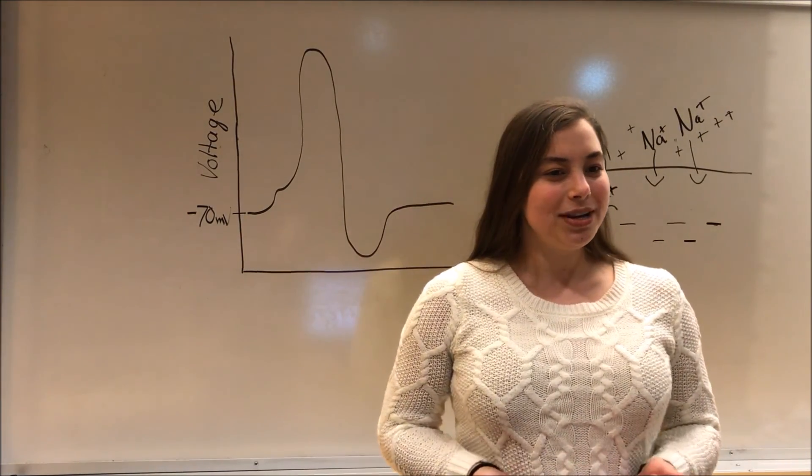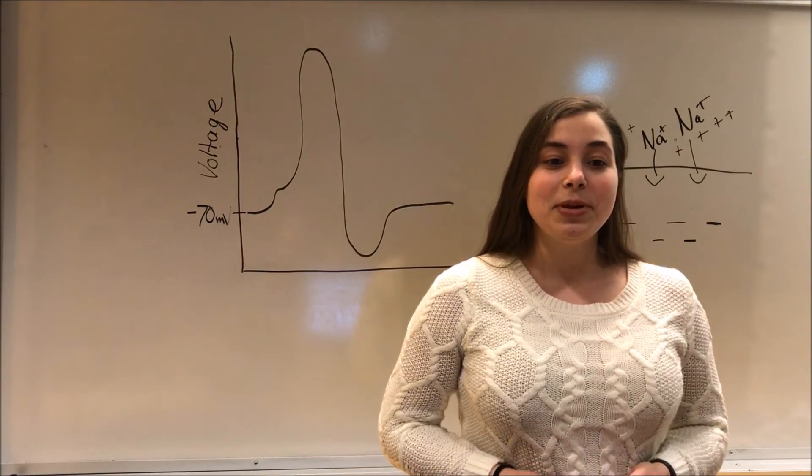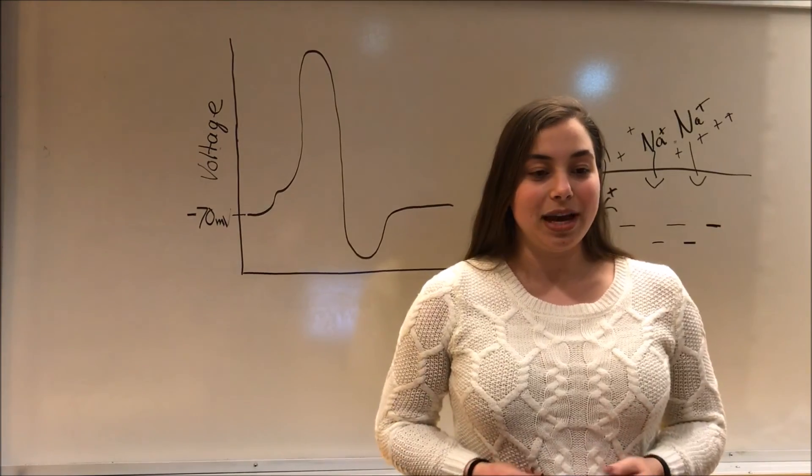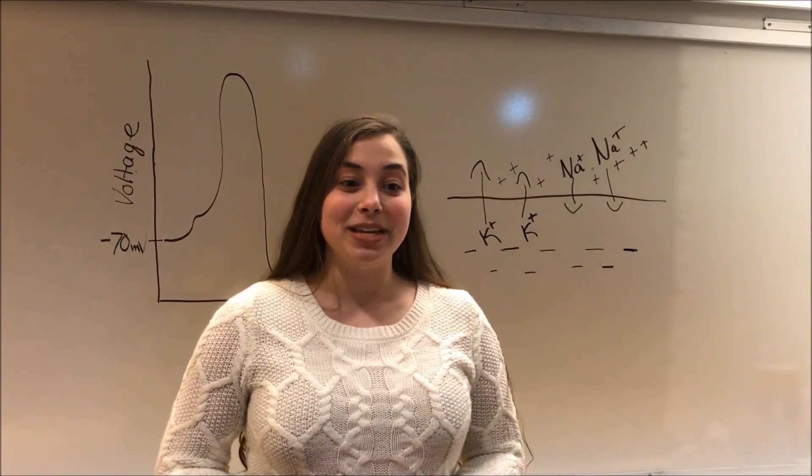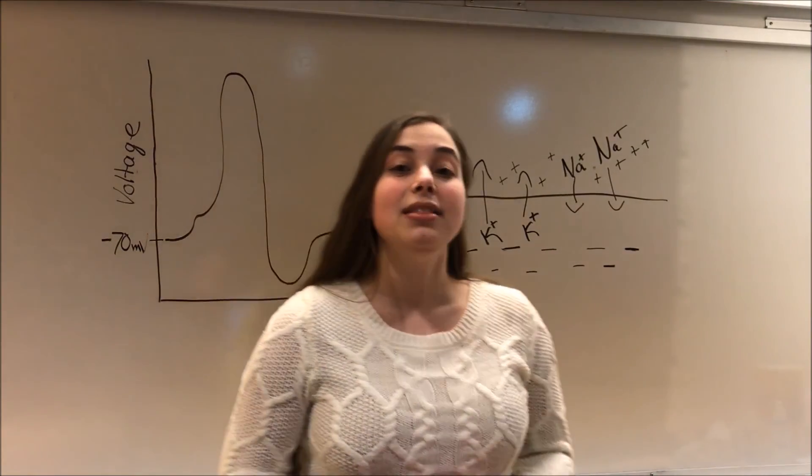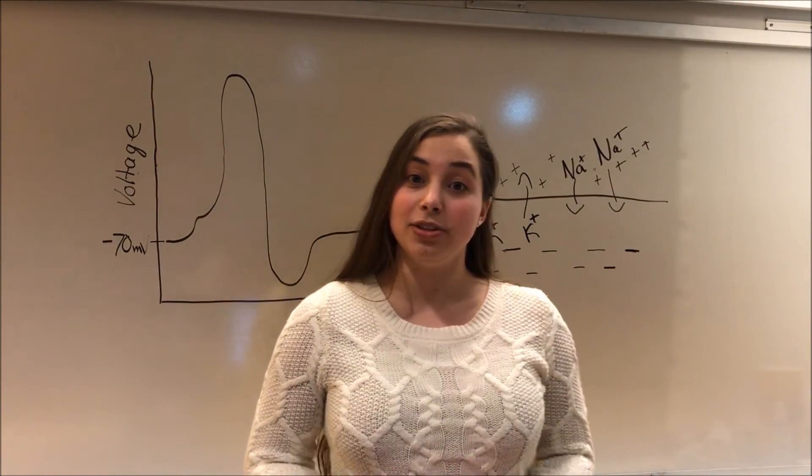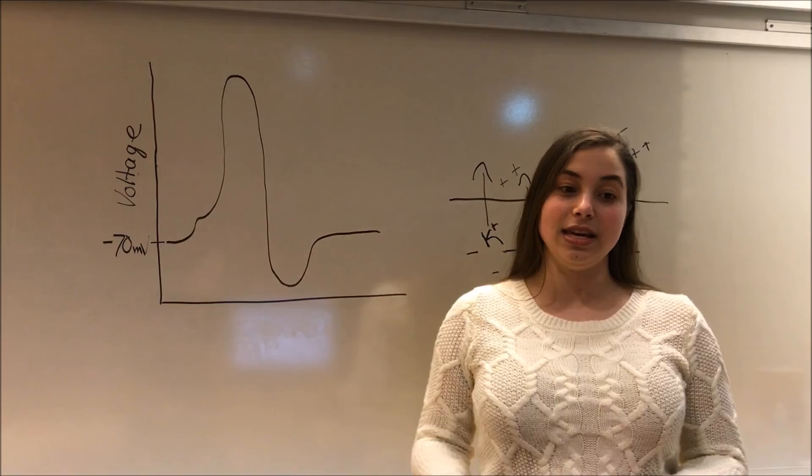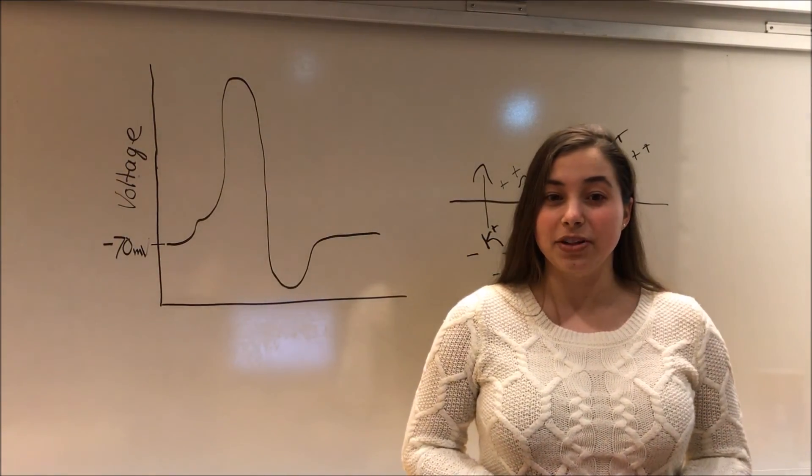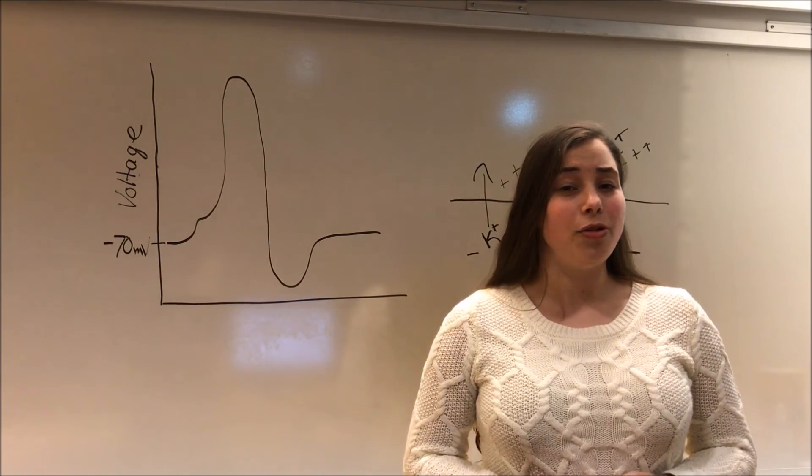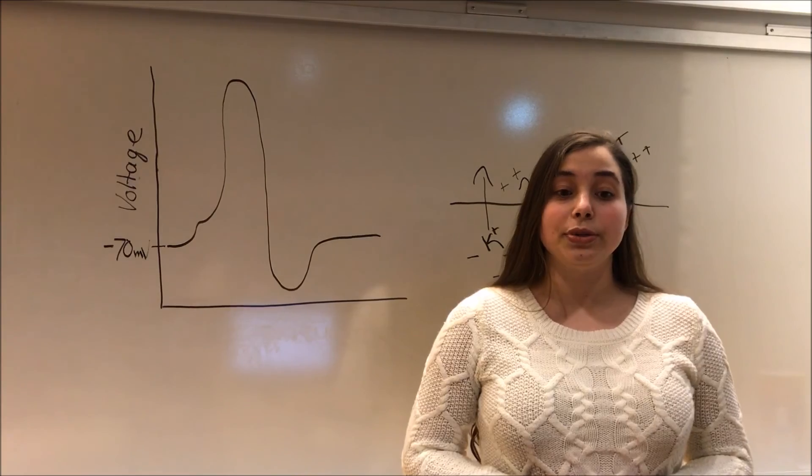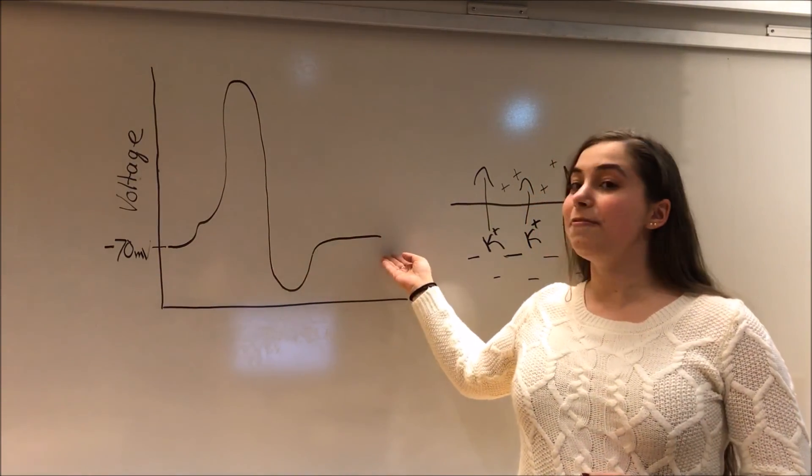You may be wondering, what is a refractory period? This is a period of time in which another action potential cannot occur. This prevents our neurons from firing all of the time. Finally, the potassium gates will continue to stay open and potassium will continue to flow out, making the inside of the cell even more negative than its normal resting potential, as you can see here. This hyperpolarization makes it even harder for the neuron to fire again, because it's even farther from threshold. This is also called the relative refractory period. Finally, the membrane potential will return to rest, and the neuron will be ready to fire again.